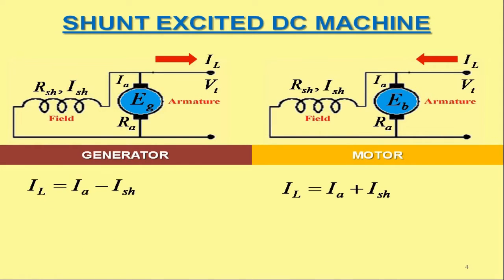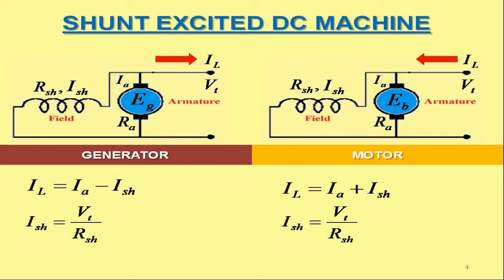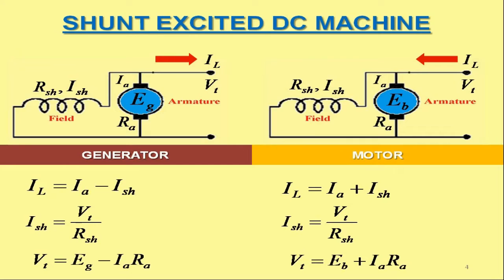The current IL can be found by subtracting the shunt field current ISH from the armature current IA in case it is a shunt excited DC generator. On the other hand, the current IL can be found by adding the shunt field current ISH into the armature current IA in case it is a shunt excited DC motor. The field current ISH can be calculated by dividing the terminal voltage VT by shunt field resistance RSH. In case of shunt excited DC motor, the terminal voltage VT can be calculated by adding the armature voltage drop IA·RA into the back EMF EB.